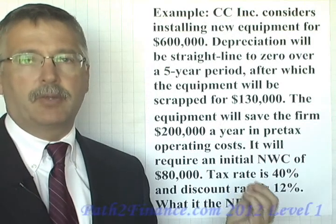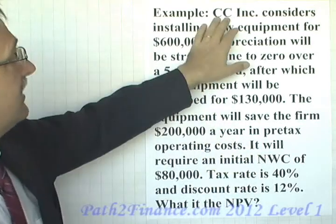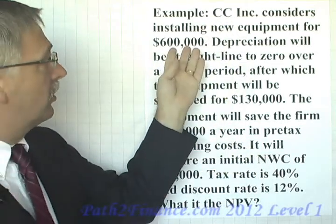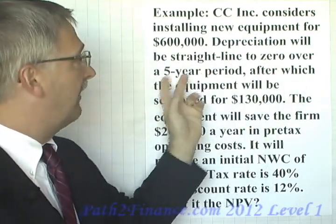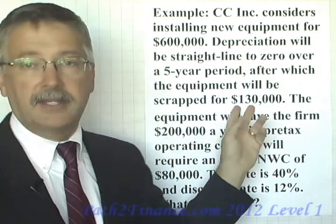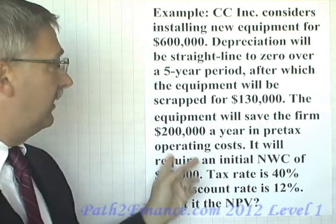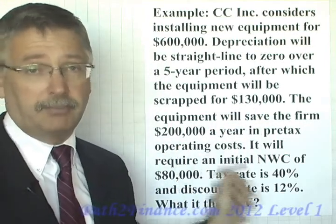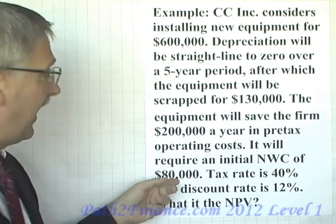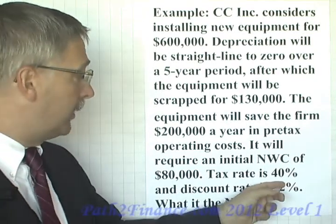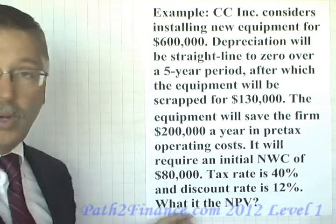This example is going to deal with both net working capital and salvage value. CC Inc. — we're going to consider putting in new equipment at a cost of $600,000. We'll depreciate that equipment straight line over five years down to zero. Then the equipment is going to be scrapped and sold for $130,000. The equipment is going to save us $200,000 a year in pre-tax operating costs, and we're going to have a net working capital increase of $80,000. Our tax rate is 40% and our required rate of return, our discount rate, is 12%. What's the net present value?